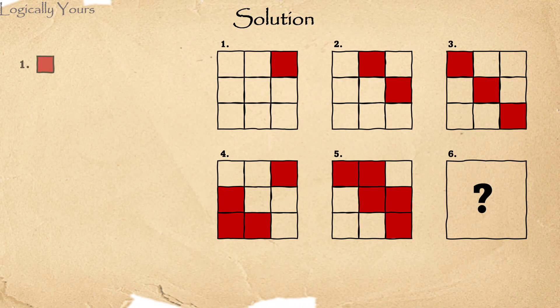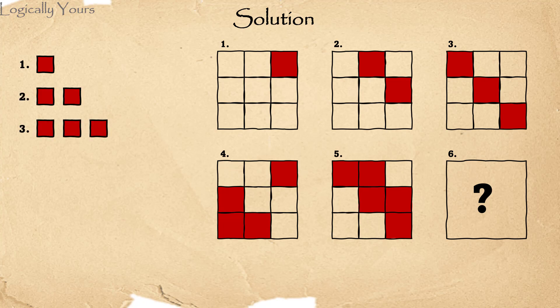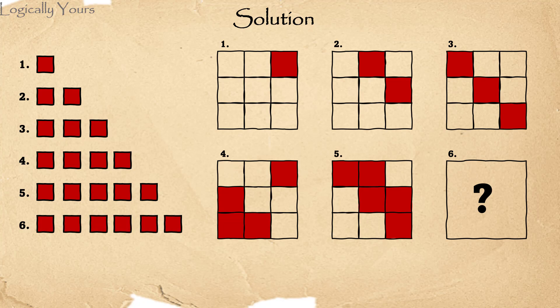The first picture has one red square. The second picture has two red squares, then three red squares, four squares, five squares. So logically the next picture in this series should have six red squares.